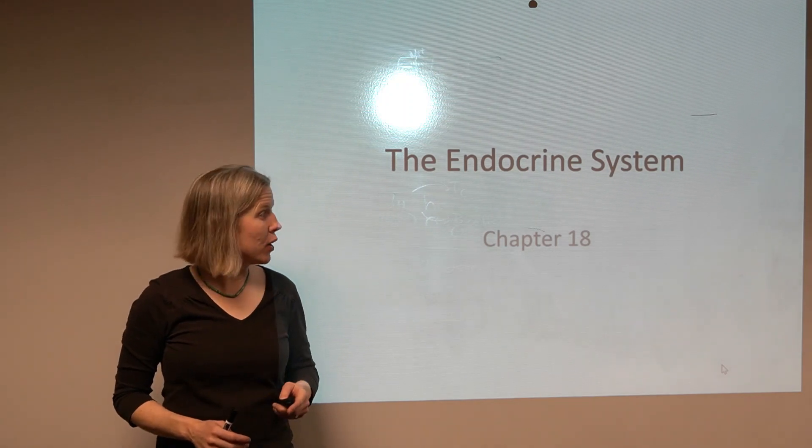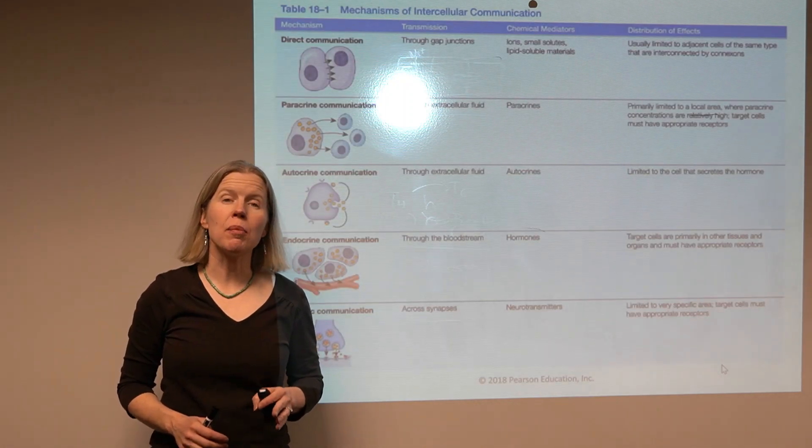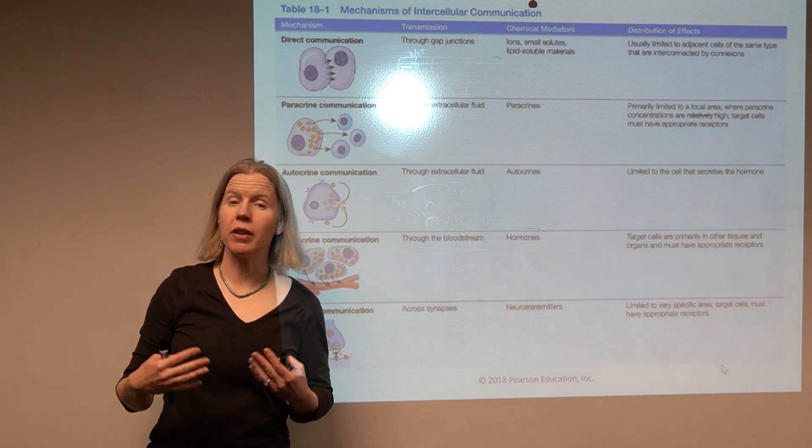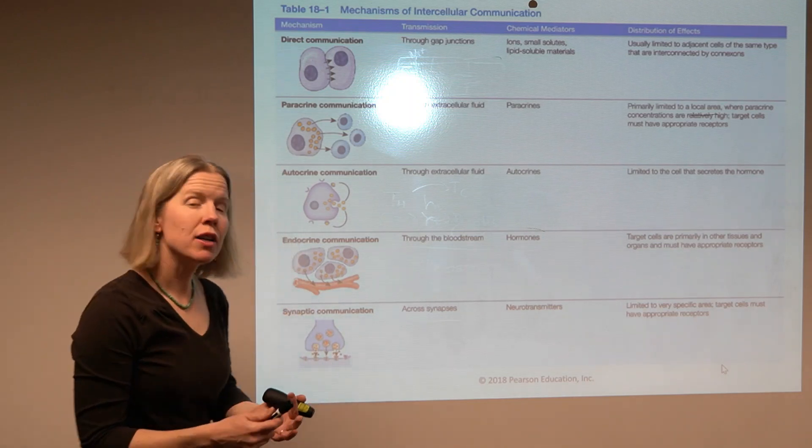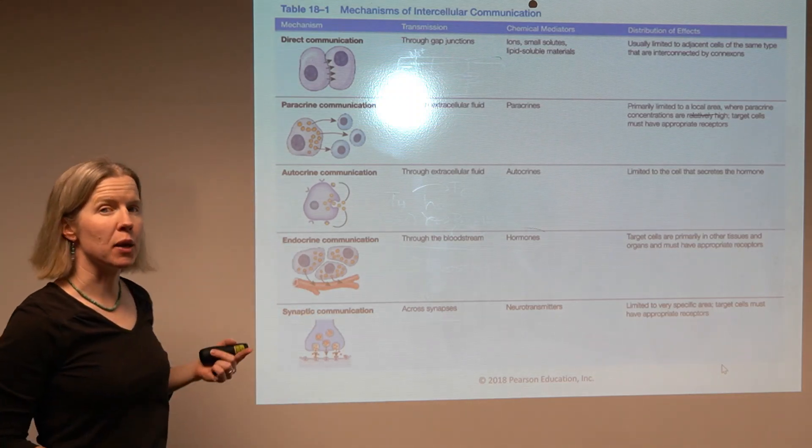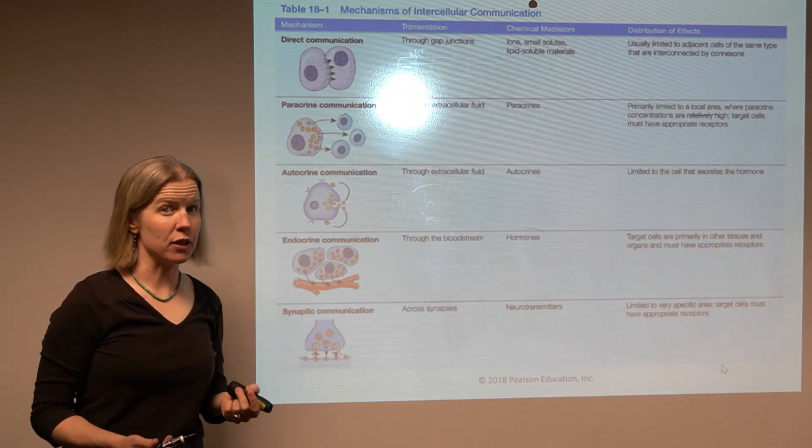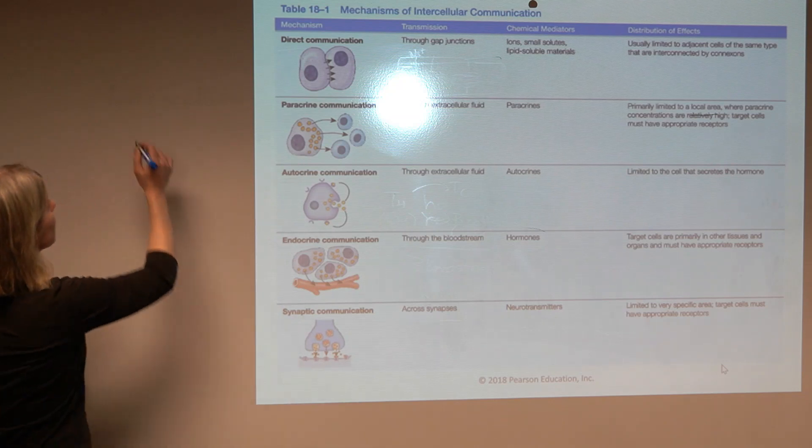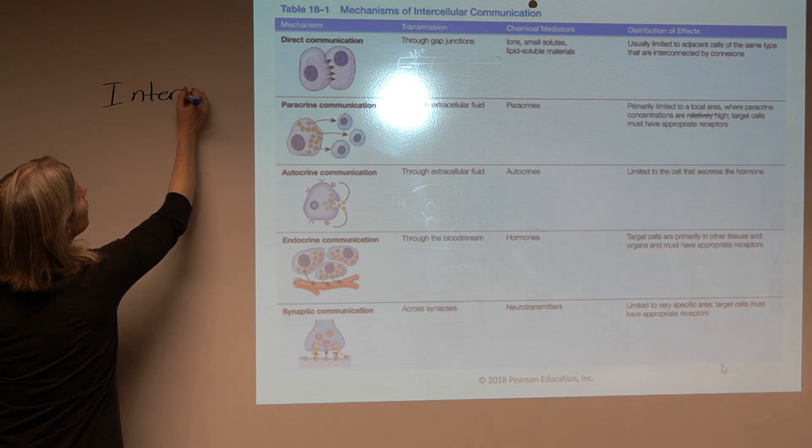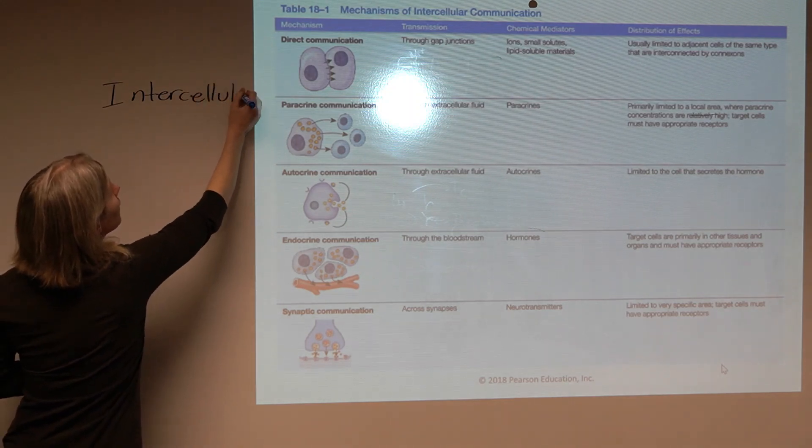So then, in chapter 18, we are going to start off by thinking about different types of communication that takes place between cells. So this is intercellular communication, and we see five different types here. Now, table 18.1 does a really nice job of summarizing this information.